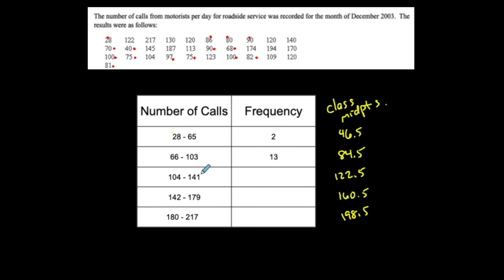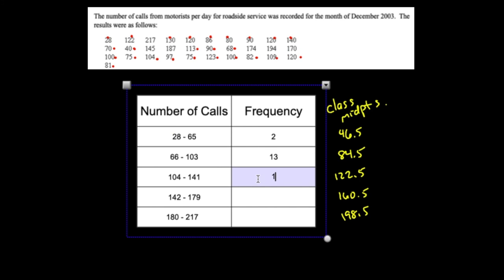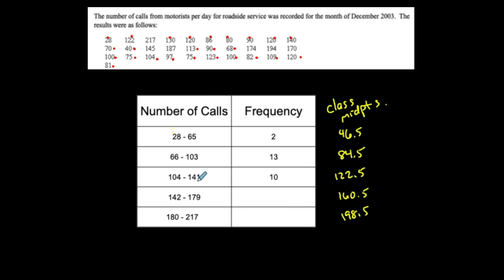Between 104 and 141 inclusive, I count: 1, 2, 3, 4, 5, 6, 7, 8, 9, 10 — including 104. So this frequency is 10. That was a large frequency for this particular case; there's not a lot of data values here. Between 142 and 179, I find: 1, 2, 3 — and that's it. This frequency is only 3, with only 3 values in this interval.